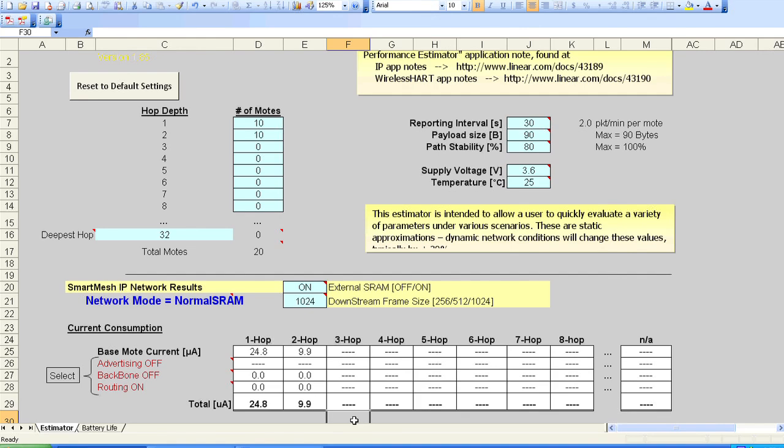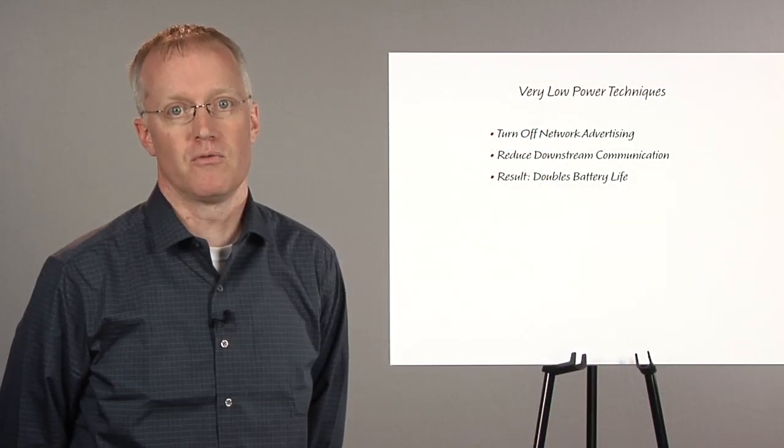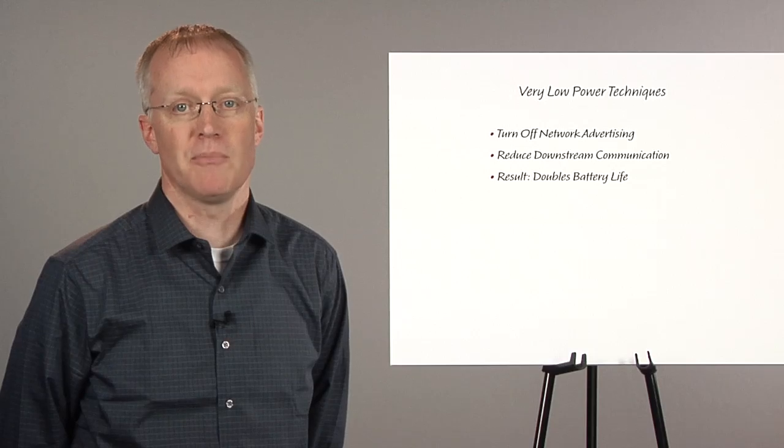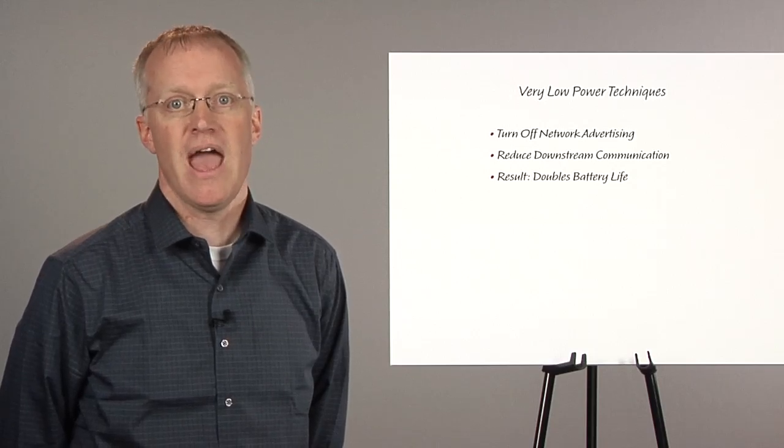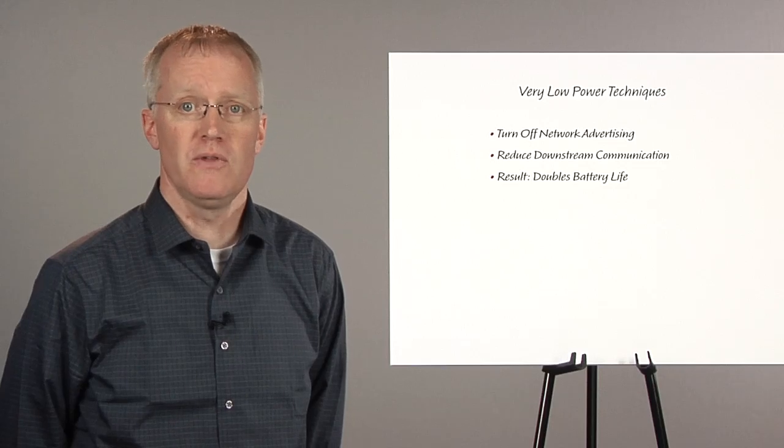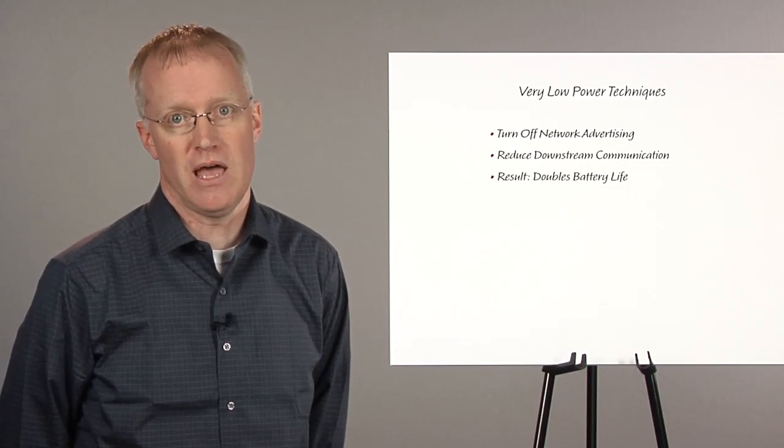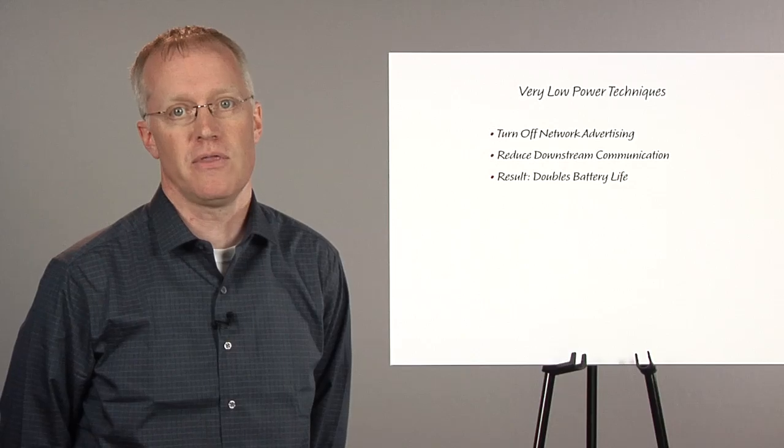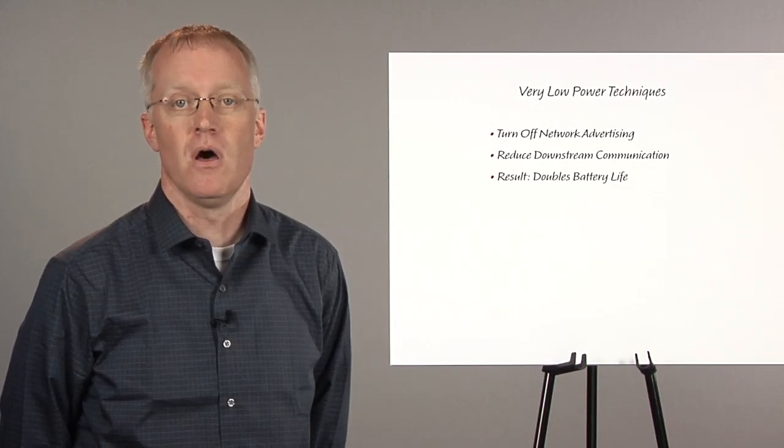With these two changes, my one-hop motes dropped to about 25 microamps, and my two-hop motes dropped to under 10 microamps, and the sensor data reporting is exactly the same. So these two techniques more than double battery life. Once you are down below 10 microamps, you can truly start to think about 10-year battery life on a small battery.